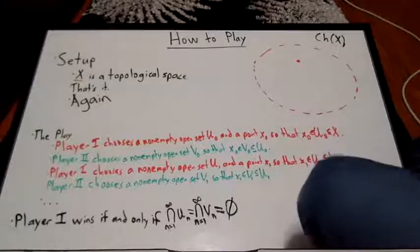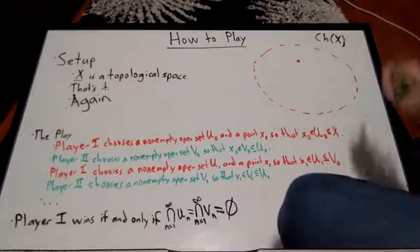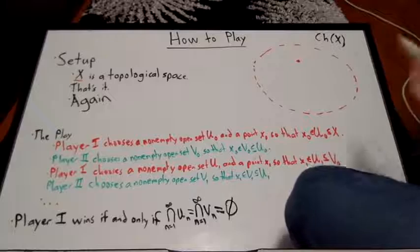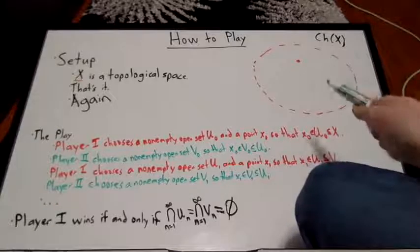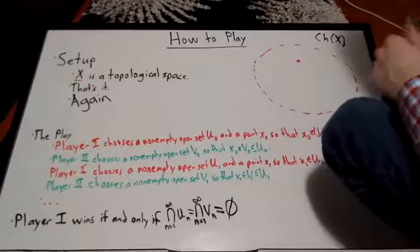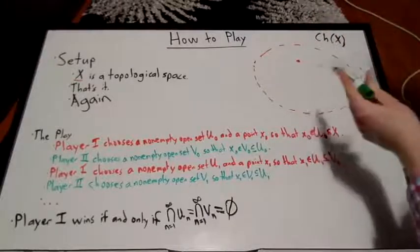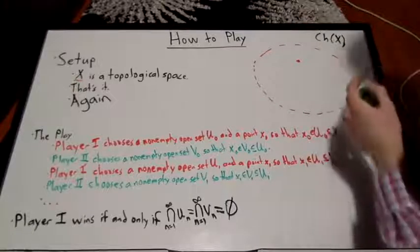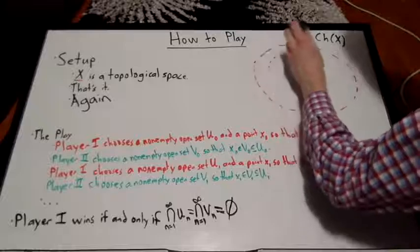Now player 2 chooses a non-empty open set V0 that is a subset of the set that player 1 previously played. And of course, the set is non-empty, because otherwise the game would just end prematurely by going, oh, I choose the empty set, and then player 1 would automatically win. So player 2 chooses a non-empty open set V0 that's a subset of U0, but here's the catch: that V0 has to contain this point.